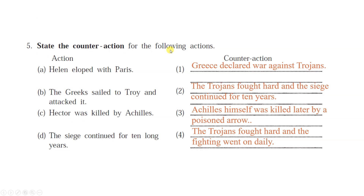State the counteraction of the following actions. First action: Helen eloped with Paris. Counteraction: Greece declared war against the Trojans. Second action: The Greeks sailed to Troy and attacked it. Counteraction: The Trojans fought hard and the siege continued for 10 years. Hector was killed by Achilles. Achilles himself was killed later by a poisoned arrow. The Trojans fought hard and fighting went on daily.